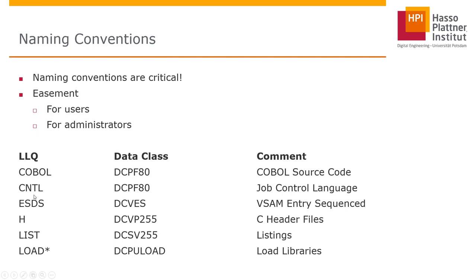Other naming convention examples include: CNTL for JCL, a VSAM dataset qualifier, a header file for C language code, a list file, and LOAD* — meaning everything with a last level qualifier beginning with LOAD is treated as a load library, with special assignments and so on.